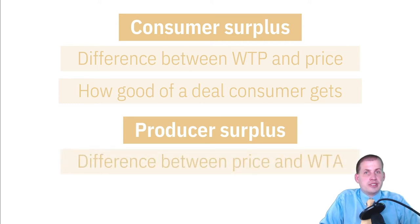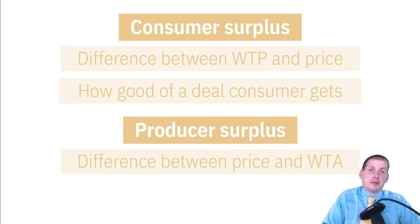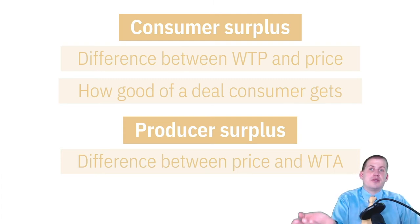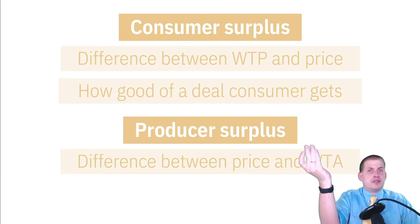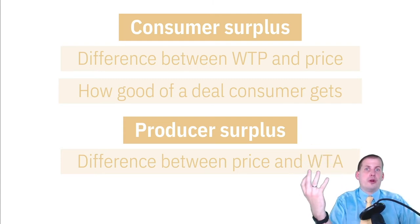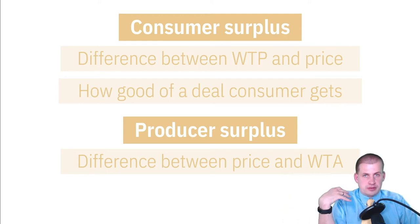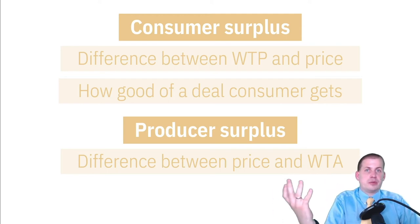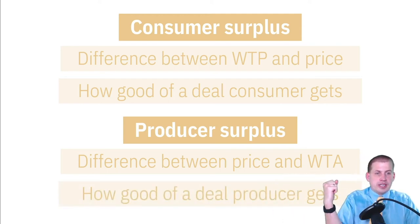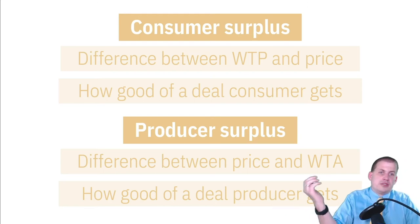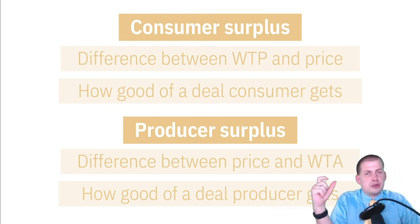You also have producer surplus, which is the difference between the willingness to sell (or willingness to accept) and the price. If a seller is willing to sell something for two dollars but can sell it for six, they get four dollars of surplus. Again, it's these 'good deal points' that we're measuring with surplus.